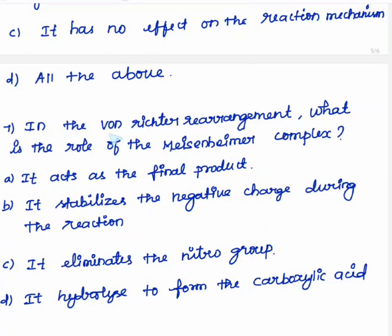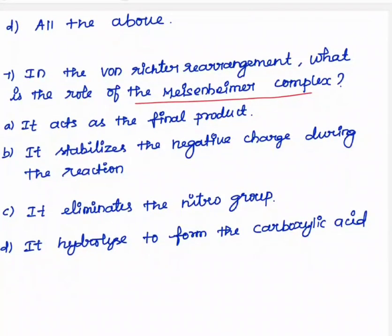Last question: in Von Richter rearrangement, what is the role of the Meisenheimer complex? The Meisenheimer complex stabilizes the negative charge during the reaction. This is option B. Because Meisenheimer rearrangement is involved in the aromatic nucleophilic substitution which stabilizes the negative charge. I hope all are understood. Thank you.